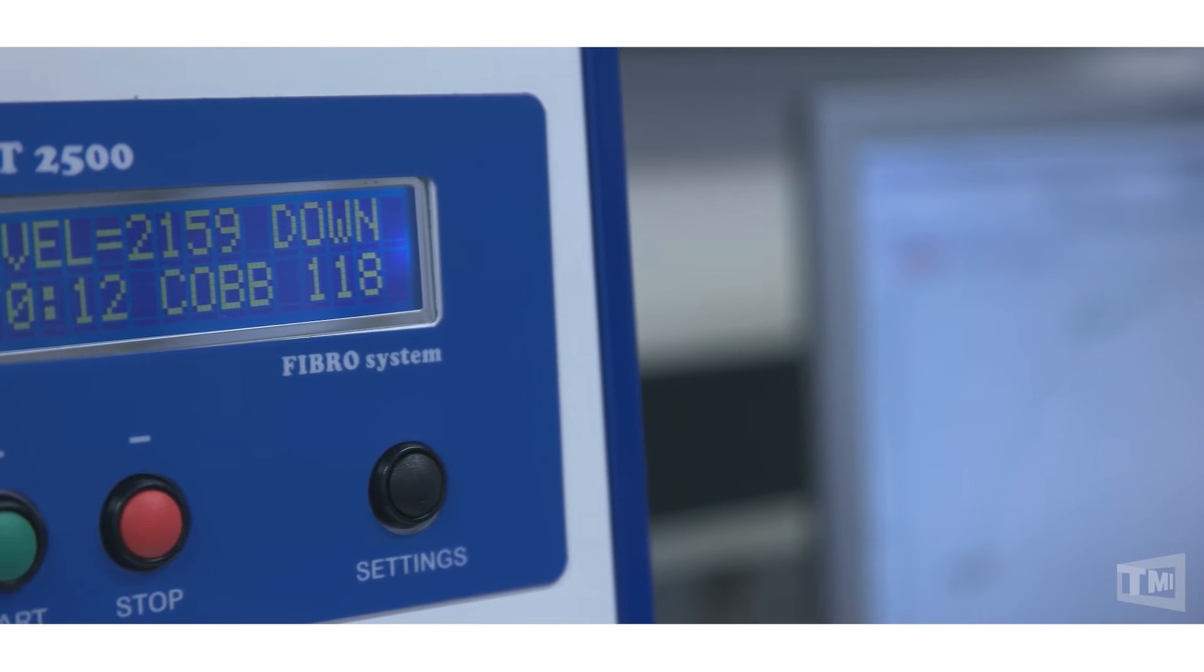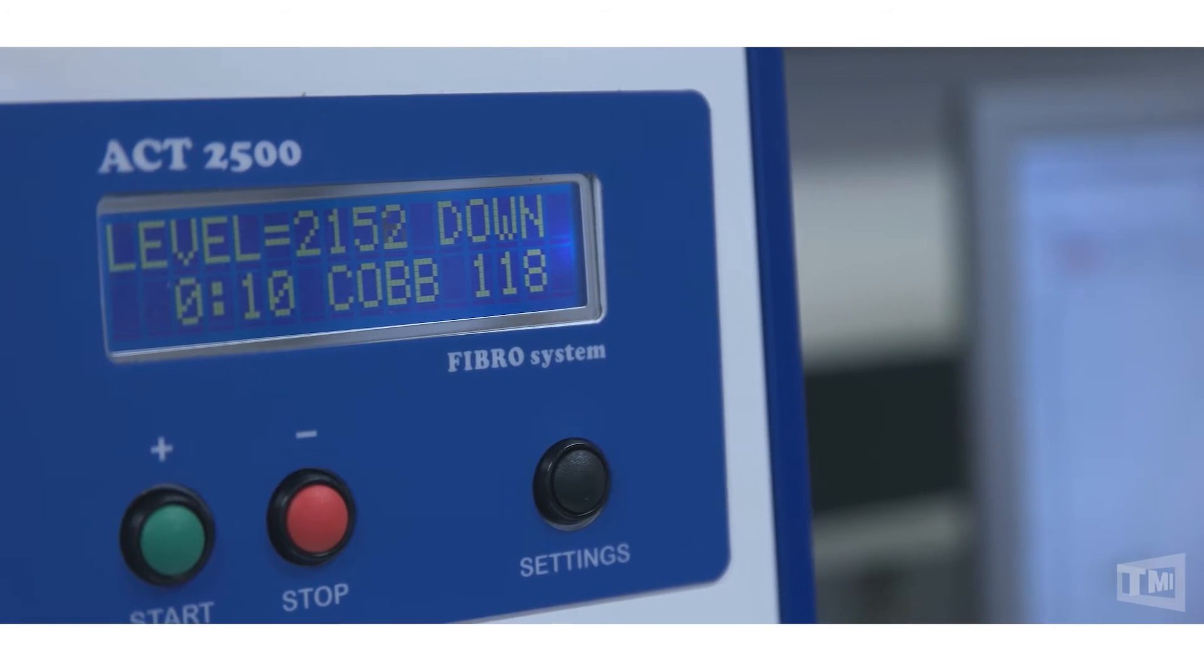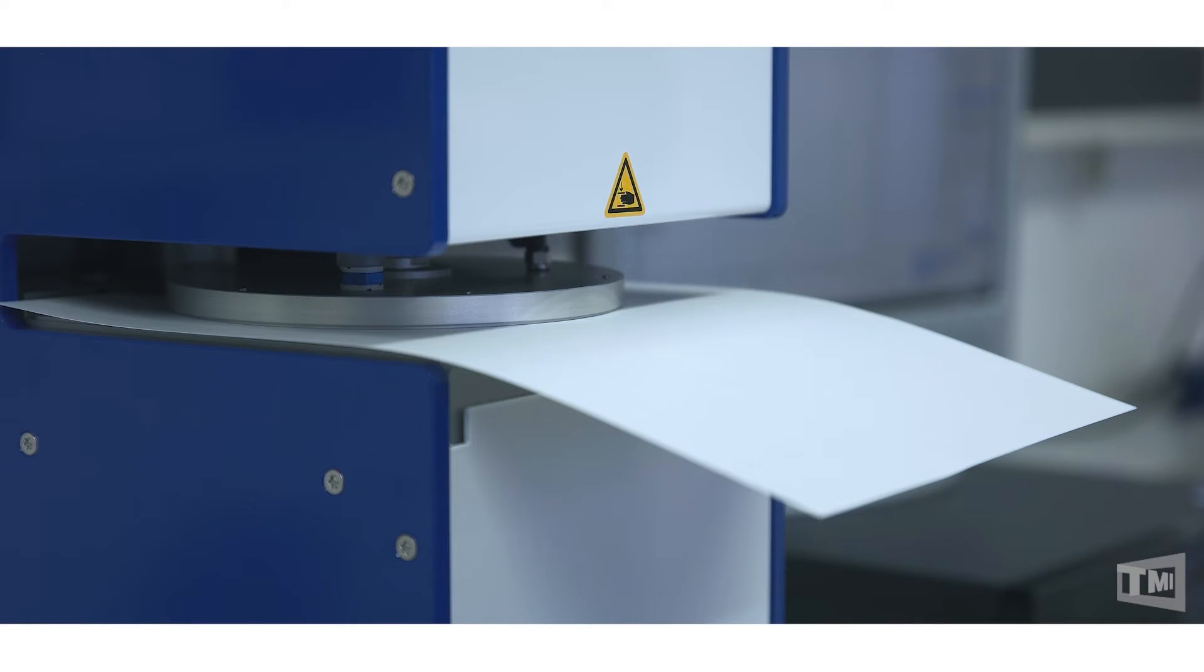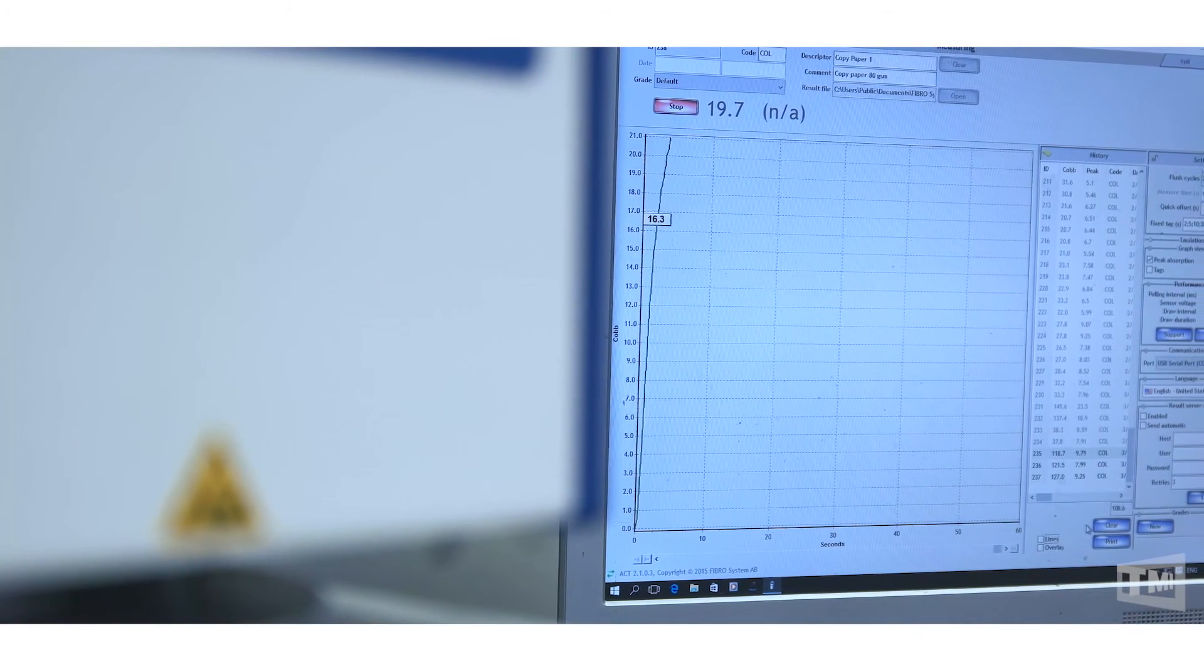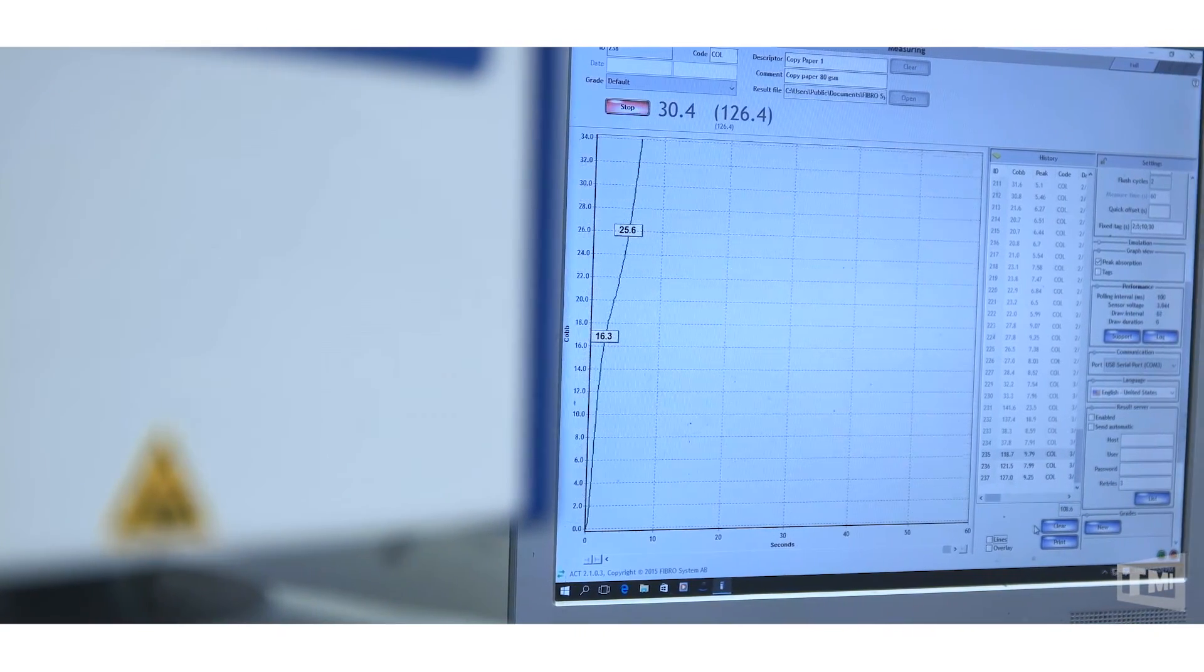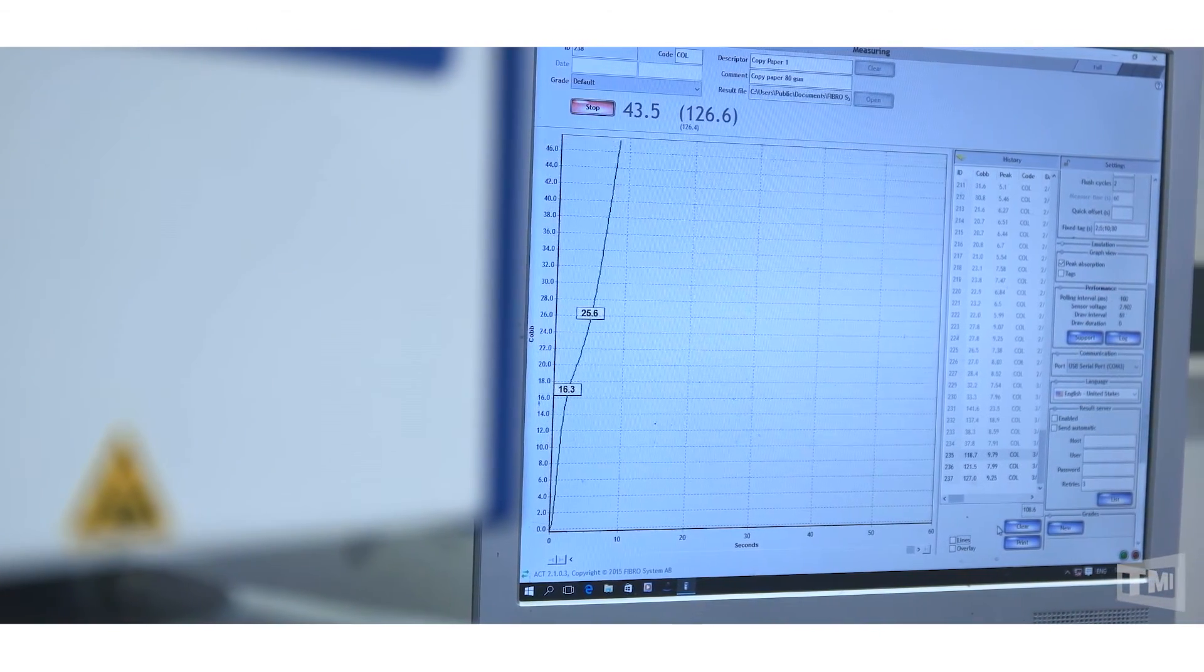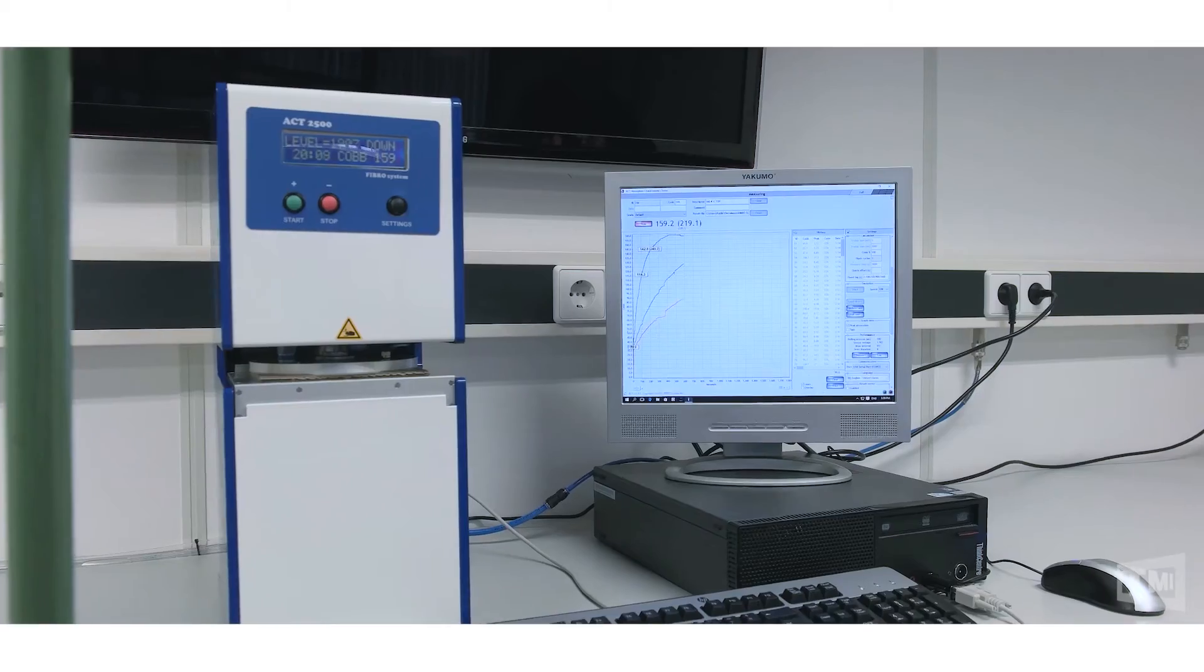There are three main reasons why the ACT brings value to your mill operations. Number one is the possibility of lowering your sizing costs by adjusting the sizing amounts. The second reason is time savings. Once you place the specimen in the ACT, you leave it. After the two minutes, it's recorded, it's in history, and you can bring back the history whenever you want.